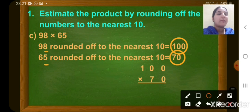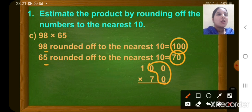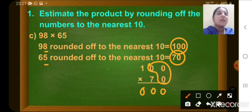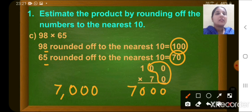Now we will find the product: 100 multiplied by 70. How many zeros can you see? There are 3 zeros — 1, 2, and 3. So first we will write these 3 zeros, and then we will multiply the remaining digits, which are 1 and 7. 1 seven is 7. So the estimated product here is 7000.